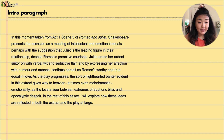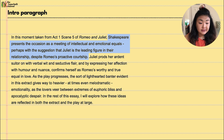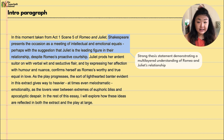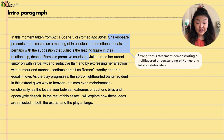The intro paragraph reads: In this moment taken from Act One Scene Five, Shakespeare presents the occasion as a meeting of intellectual and emotional equals, perhaps with the suggestion that Juliet is the leading figure in their relationship despite Romeo's proactive courtship. Right away the student tells us they are matching each other both emotionally and intellectually, with a feminist undertone — Juliet taking more of the lead despite Romeo's eager demeanor.